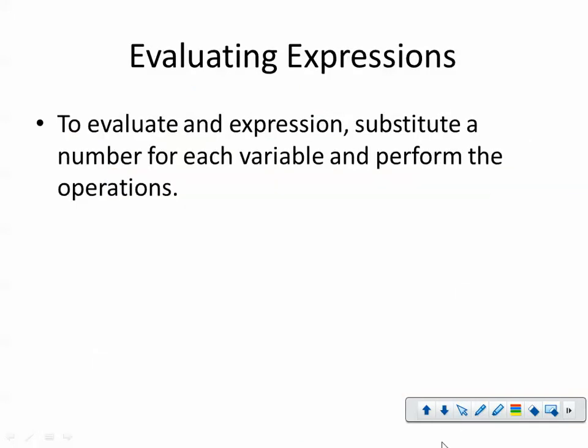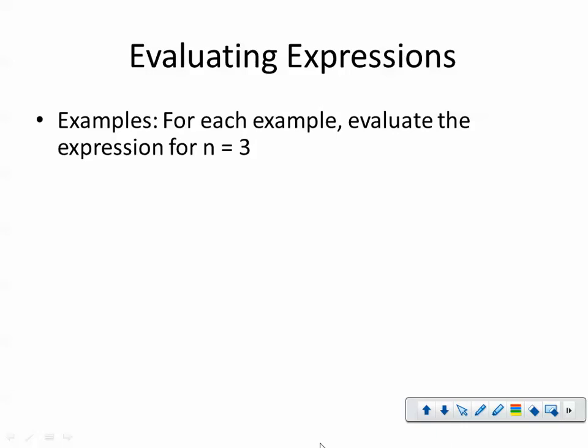Today we're going to look at evaluating expressions. To evaluate an expression, man, I've got a lot of typos in this thing. You'd think that I would stop now, correct the typos, and then make the video again later. But I'm not, because I don't care. To evaluate an expression, substitute a number for each variable and perform the operations. So you'll be given what the number you want it to be, and you should then substitute and do your operations. For example, for each of the following examples, I want the expression for n equal to 3. The first one here is 13 times n. So what I'm going to do is say that n needs to be 3. I'm going to substitute the n for 3, and then I'm going to follow the operations. 13 times 3 is 39.